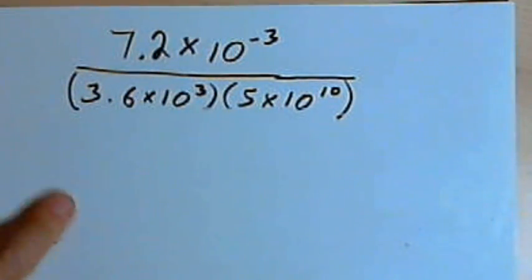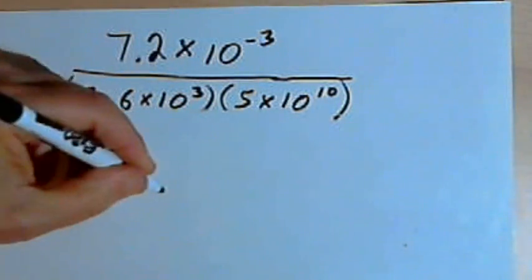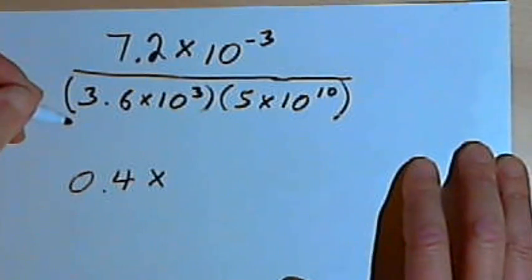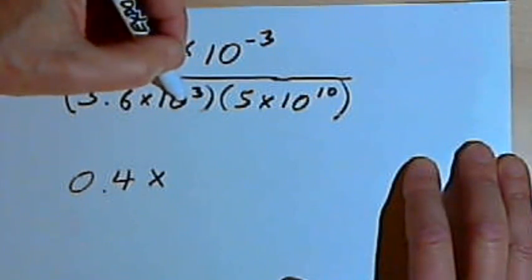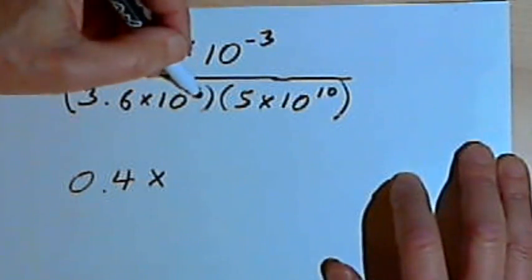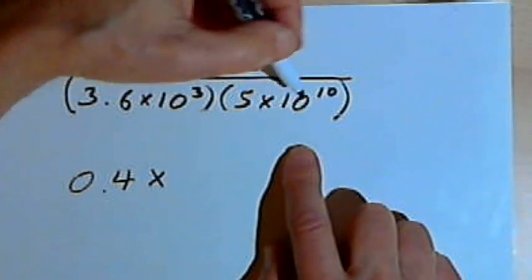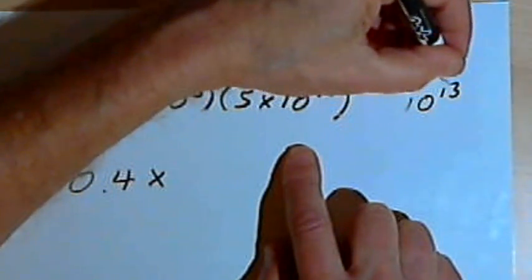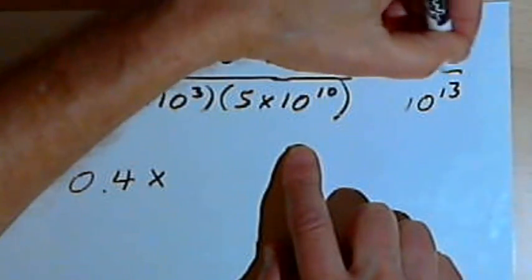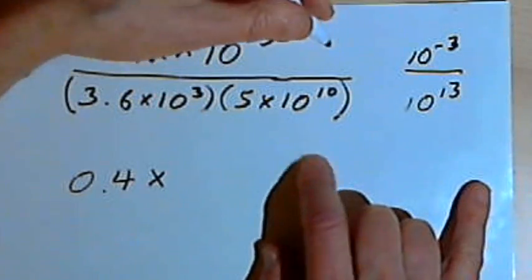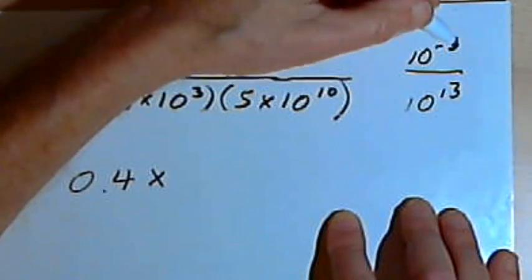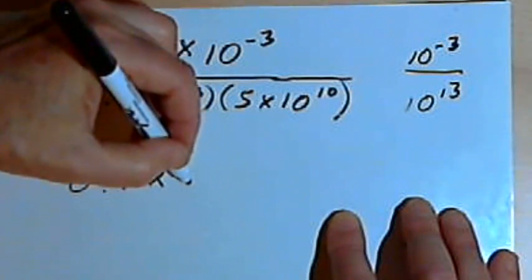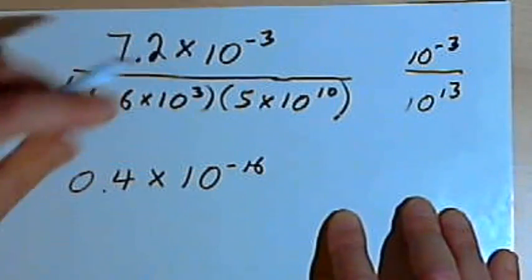So I have 0.4 times... and now I need the power of 10 part. I've got a 10 to the negative 3rd as my numerator, and 10 to the 3rd times 10 to the 10th in the denominator. So first I'll combine the 10 to the 3rd times 10 to the 10th. That's going to be 10 to the 13th. I've just added the two exponents. My numerator is still 10 to the negative 3rd. So I've got a negative 3 in the numerator as an exponent, and a 13 as the exponent in the denominator, which means I want to do negative 3 minus 13 is negative 16.